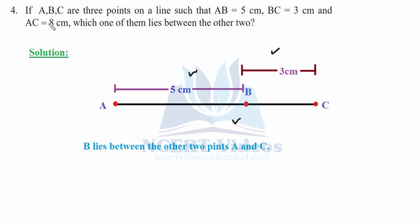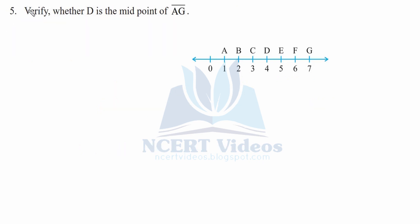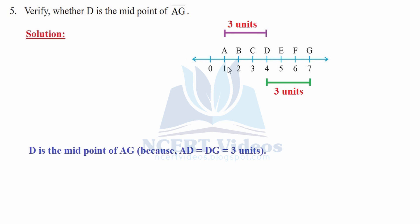Question five: verify whether D is the midpoint of line segment AG. We have AG, and D will be the midpoint if the left-hand side equals the right-hand side. Here AD is 3 units — one, two, three — and from D to G is again one, two, three units. In total we have 6 units. Therefore D is the midpoint of AG because AD equals DG equals 3 units each.